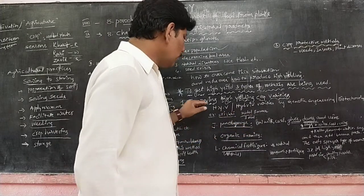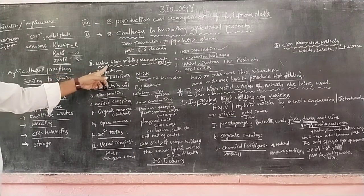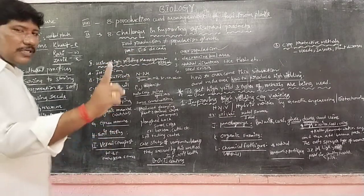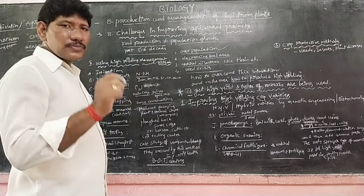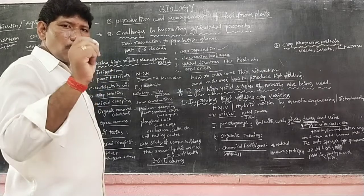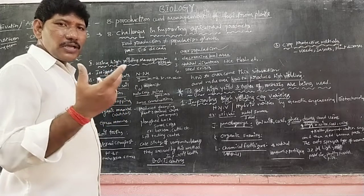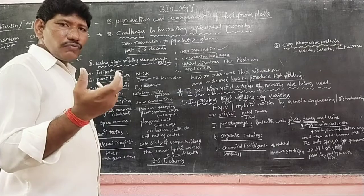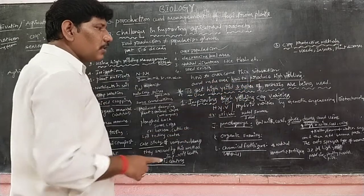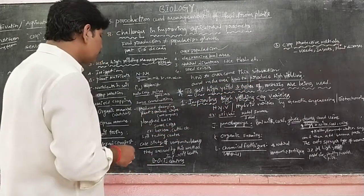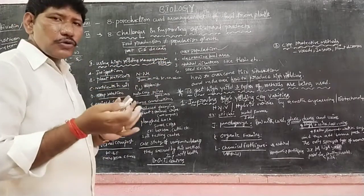Next, we move to the second method: using high yielding management methods. The first step is seed selection. We give much importance to certified and quality seeds. We already learned how to select good seeds — seeds having good color, good shape and size, and good weight. Those seeds we select for mixed cropping, or we can go for high yielding hybrid seeds.